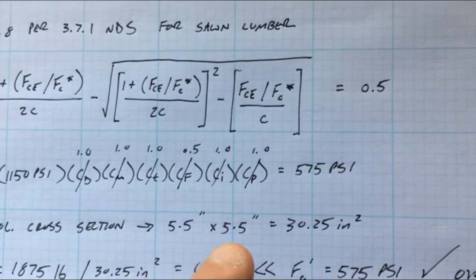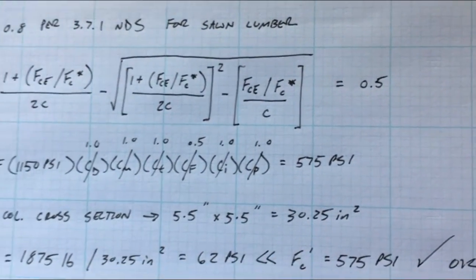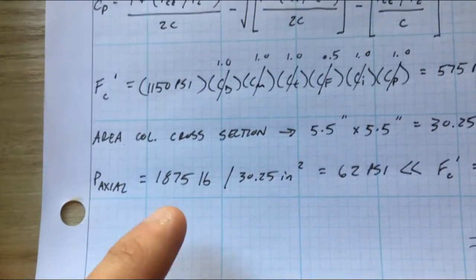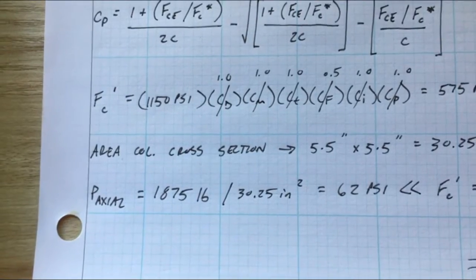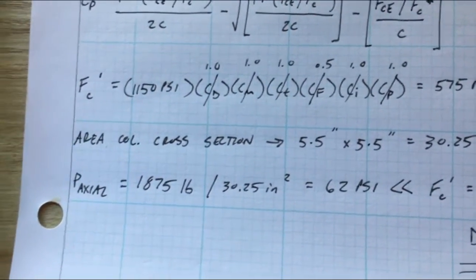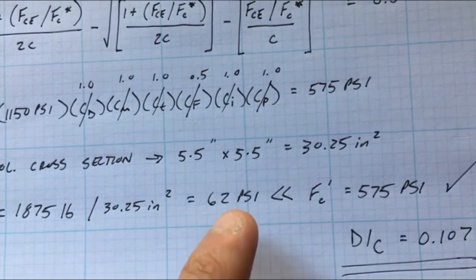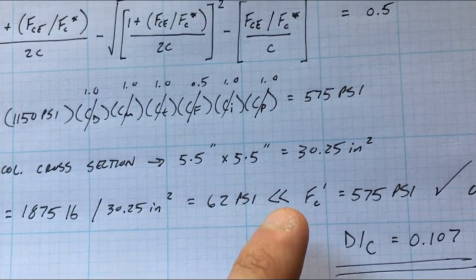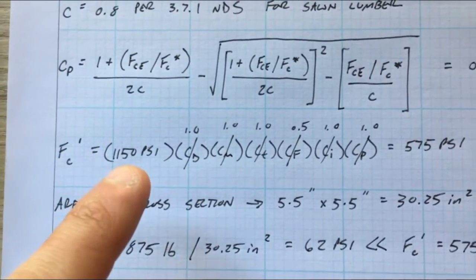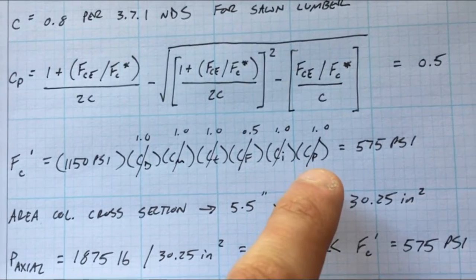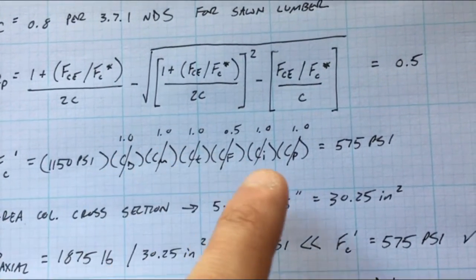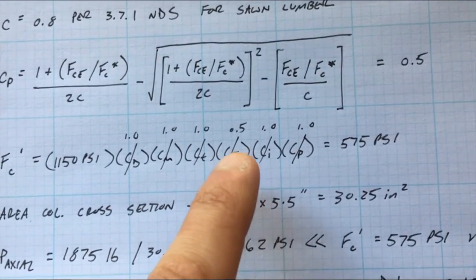Finally we just need the area of our column cross section which is five and a half by five and a half, that's 30.25 square inches. And then we know the axial load that we calculated before which is 1875 pounds. Divide that by the cross-sectional area in inches squared and that gets you 62 pounds per square inch PSI. You compare that to your Fc prime which again is just Fc times all of your factors that we defined in chapter four. All of them are 1.0 besides CP which is 0.5 from the big equation. CP, CF is 1.0.